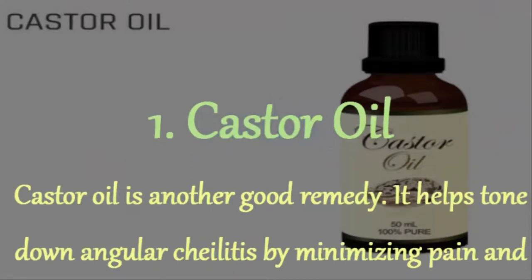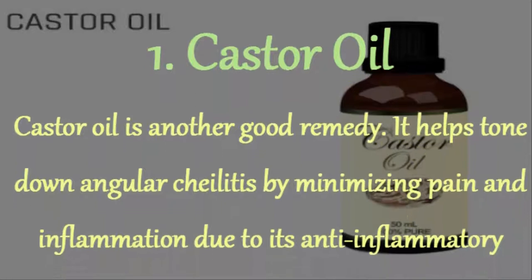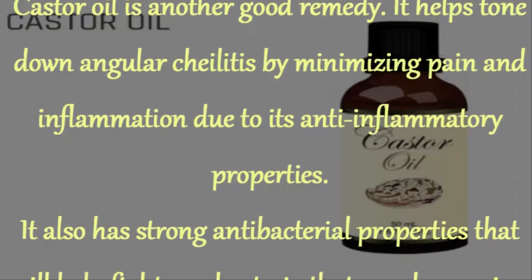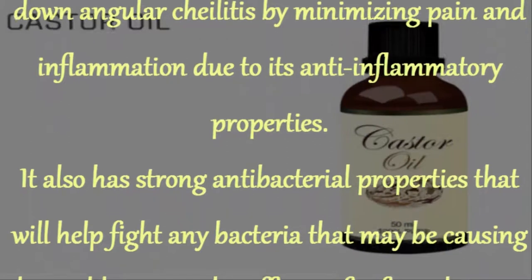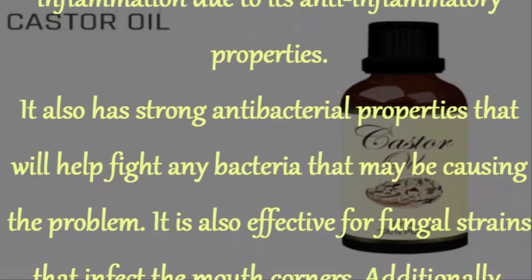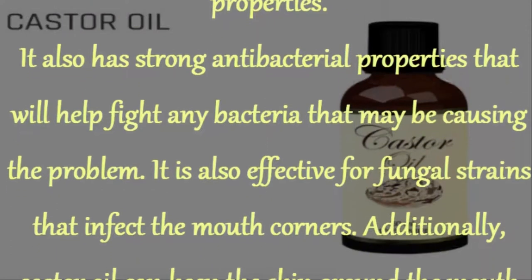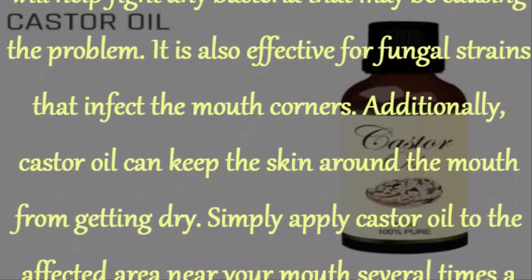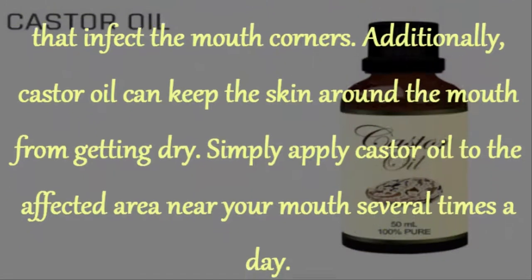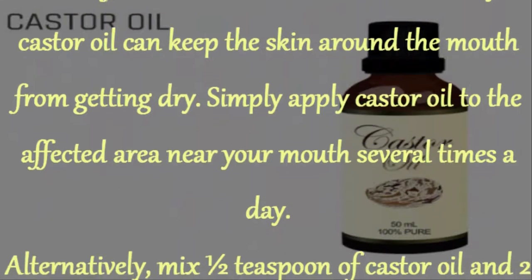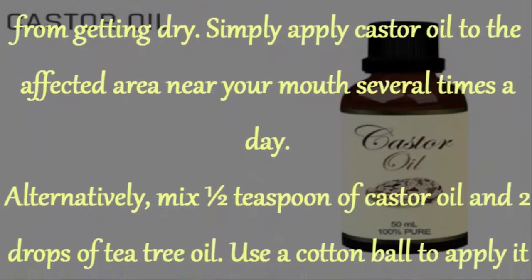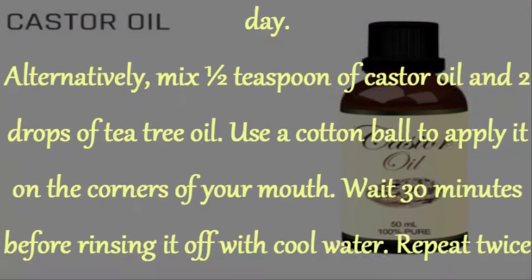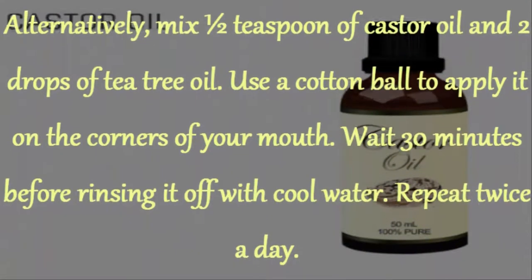1. Castor Oil. Castor oil is a good remedy. It helps tone down angular cheilitis by minimizing pain and inflammation due to its anti-inflammatory properties. It also has strong antibacterial properties that help fight bacteria causing the problem, and is effective against fungal strains that infect the mouth corners. It can also keep the skin around the mouth from getting dry. Apply castor oil to the affected area several times a day. Alternatively, mix 1/2 teaspoon of castor oil and 2 drops of tea tree oil, apply with a cotton ball, wait 30 minutes, then rinse with cool water. Repeat twice a day.